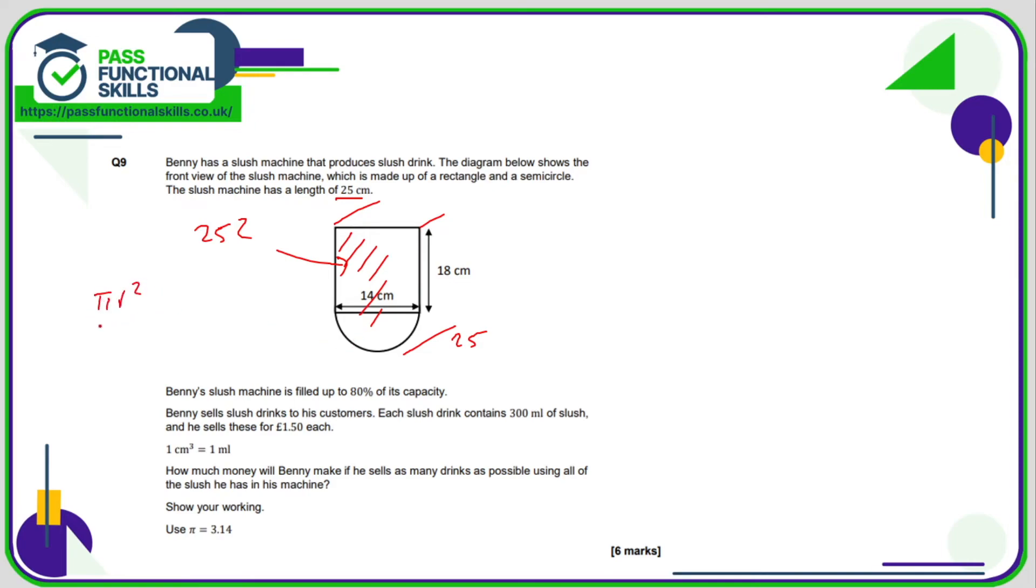Now the area of the square is 18 multiplied by 14, which is 252. This is a semicircle, so the formula for a circle is pi r squared. So we want half of pi r squared. We're using 3.14 for pi. The diameter is 14, so the radius is 7. So it's going to be 3.14 times by 7 times by 7, and then divided by 2 because it's a semicircle. So this part here has an area of 76.93. Therefore, the total area of the front face is 328.93 square centimeters.